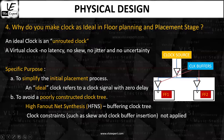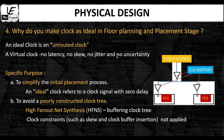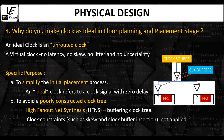Why do we make the clock ideal in the floor planning and placement stage of the physical design process? An ideal clock is an unrouted clock that goes directly from the clock source to all the clock pins of the sequential elements. It is a virtual clock that contains no latency, no skew, no jitter, and no uncertainty. Due to this simplicity, as soon as the edge is generated at the clock source, it is assumed that the clock signal reaches all clock pins of the sequential elements at the same time, meaning clock skew is zero.